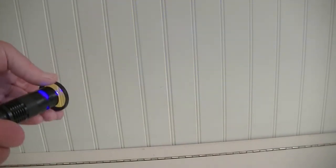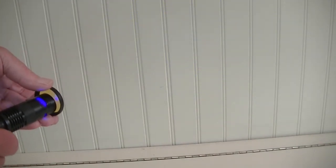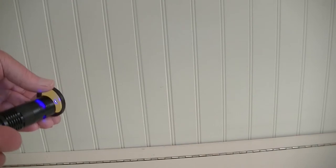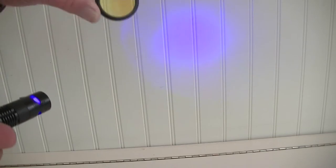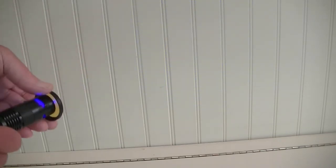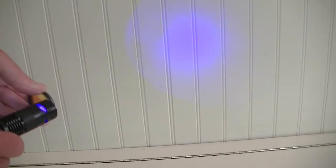It does actually let through some greeny-blue light, and a research grade filter which would cost upwards of thirty or forty dollars, this one's only about five dollars, would block that entirely. So that's what you pay for with filters - a sharper cutoff.